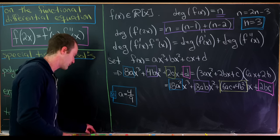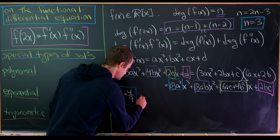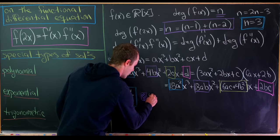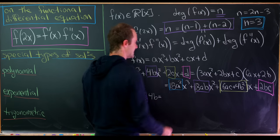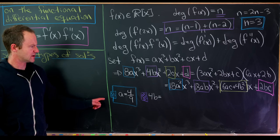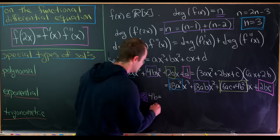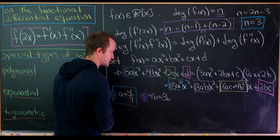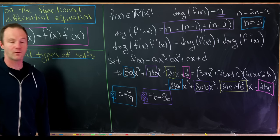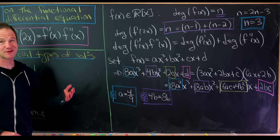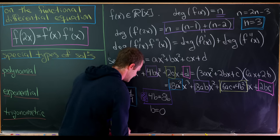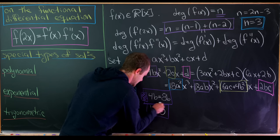From 4b = 18ab: substituting a = 4/9 gives 18a = 8, so this becomes 4b = 8b. The only solution is b = 0.